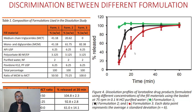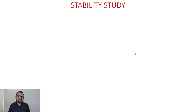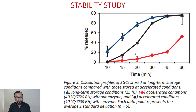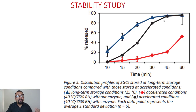This dissolution condition provides discrimination with respect to the critical excipients, making it a suitable dissolution method for loratidine soft gelatin capsules. Moving further, let us understand the impact of these dissolution conditions on stability study results, using six-month stability data at 25°C/60% RH long-term conditions and 40°C/75% RH accelerated conditions.